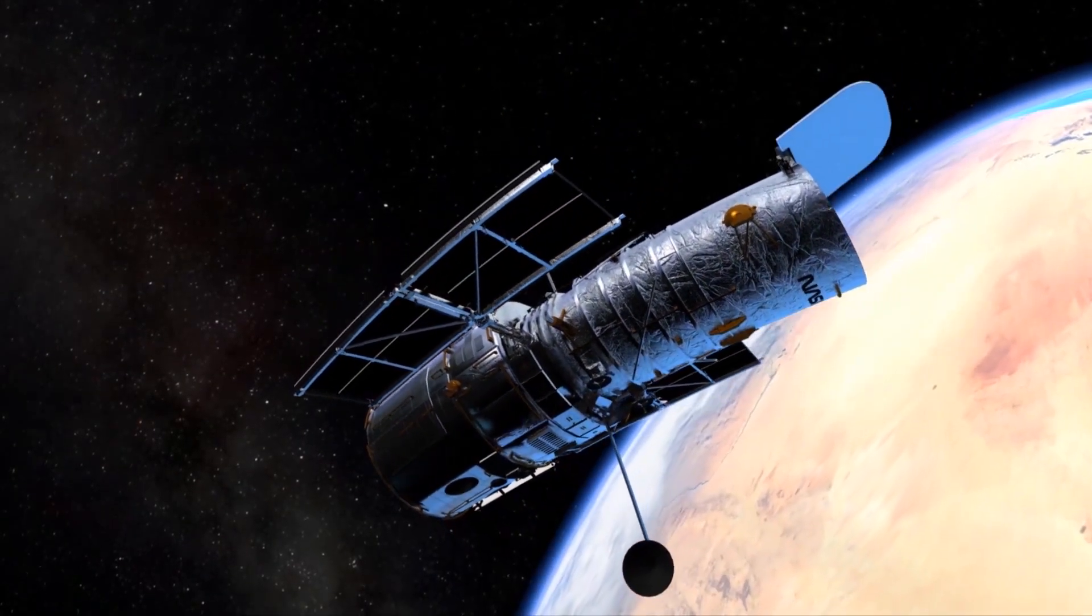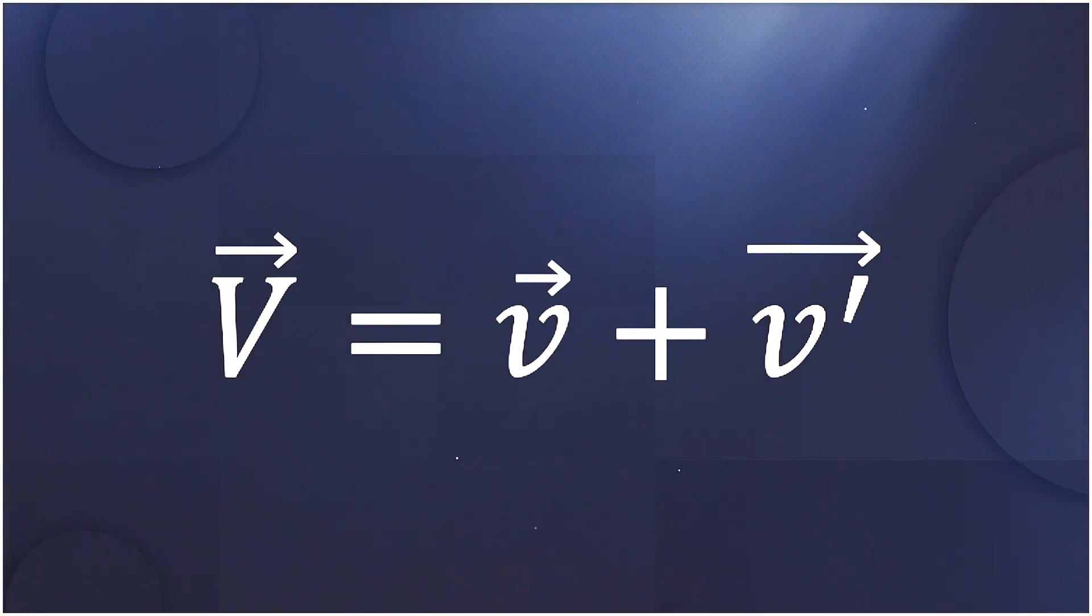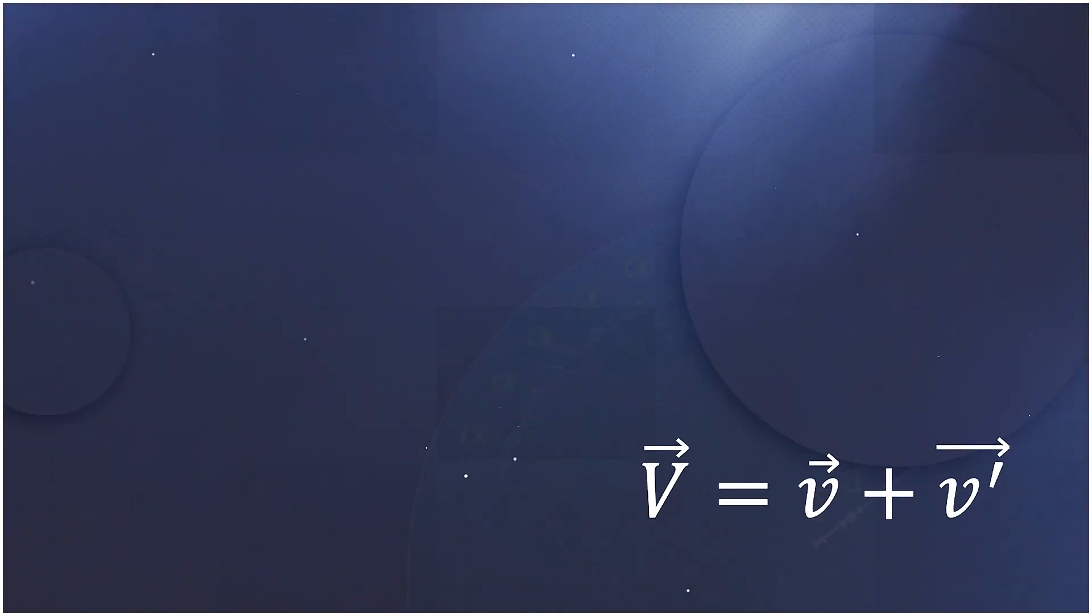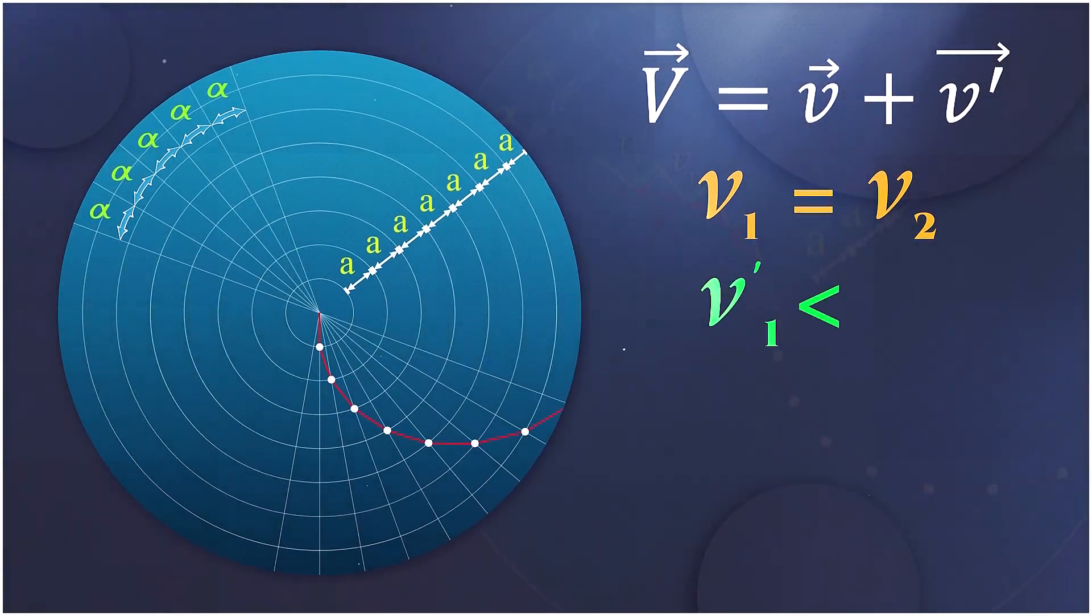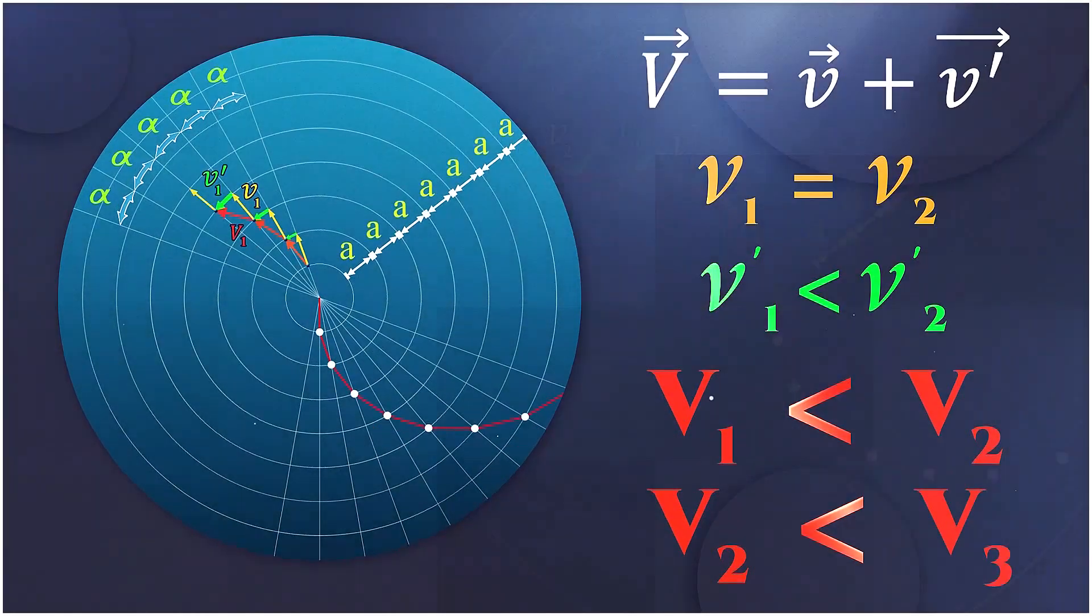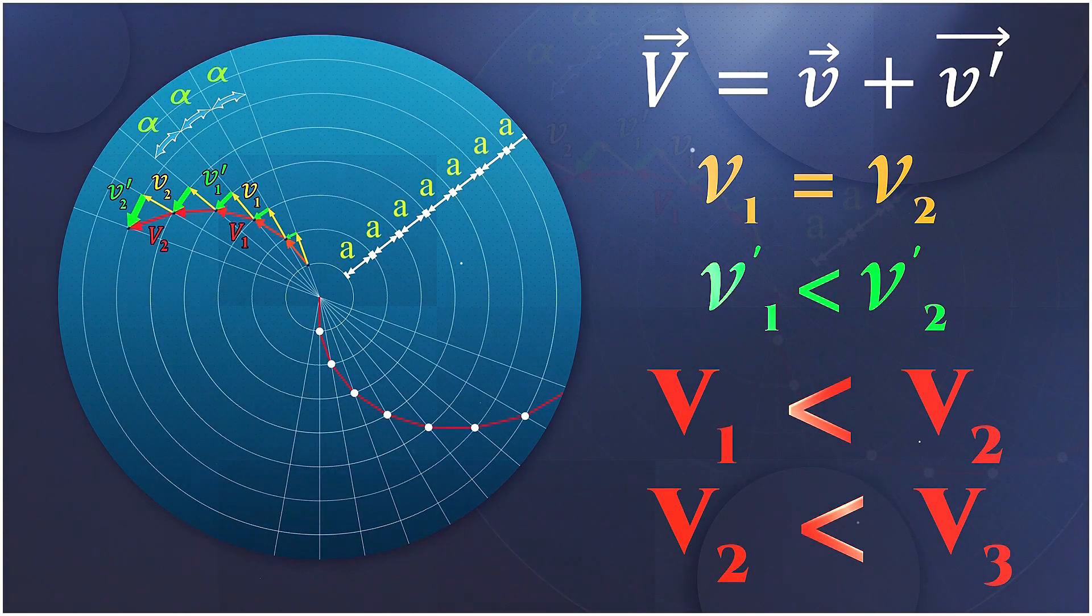But, when the telescopes observe a corner of the sky and find points, they certainly have increasing velocity. And it is always V2 is more than V1 and V3 is more than V2 that will increase over time.